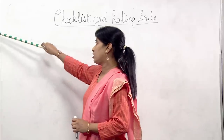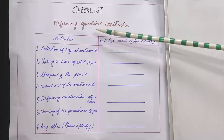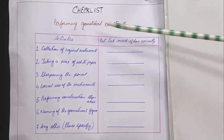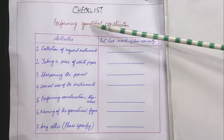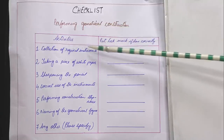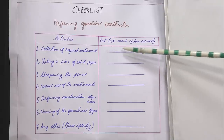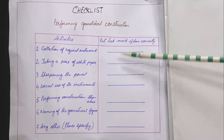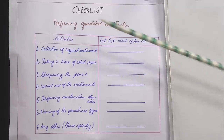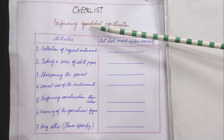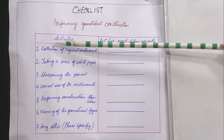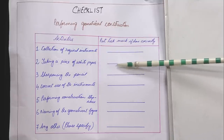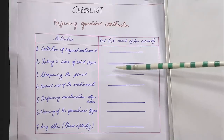Take a look at this chart. In this checklist, the theme adopted is performing geometrical construction by the students. All the activities related to performing geometrical construction will be noted down by the teacher. On the right side, the teacher will leave space for a tick mark or cross mark indicating yes or no, or whether the student has done it correctly. In this checklist, I have included: collection of acquired instruments, and taking a piece of white paper, with a tick or cross mark accordingly.